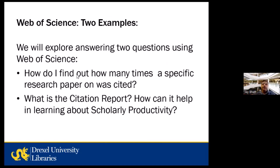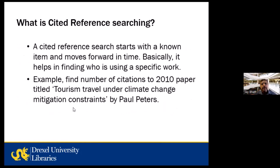To make this more interactive, I'll use two examples to answer specific questions: how do I find out how many times a specific research paper was cited, and how can a citation report be used to learn more about productivity tools. A common question from graduate students is: my advisor wants me to find out how many times this particular paper was cited, or a faculty member wants to know how many times their own paper has been cited.